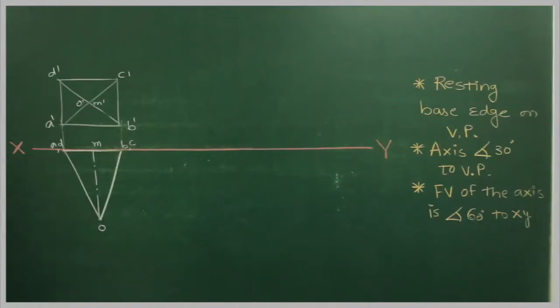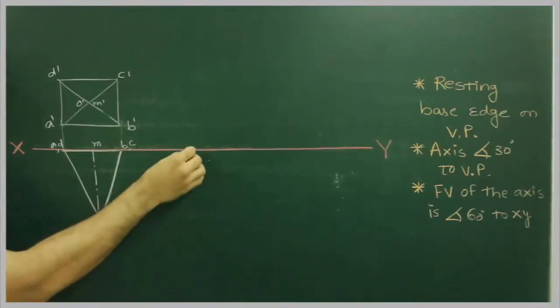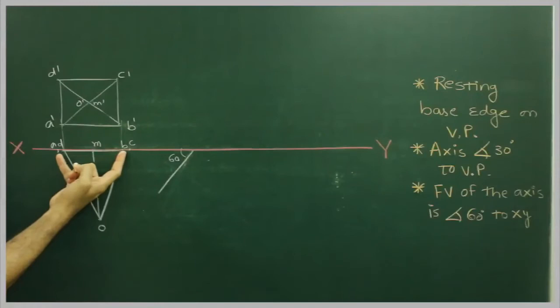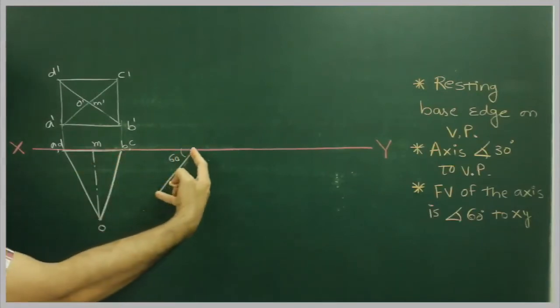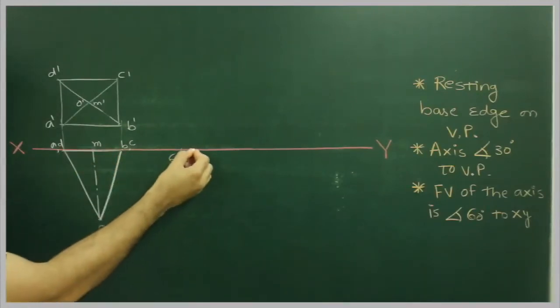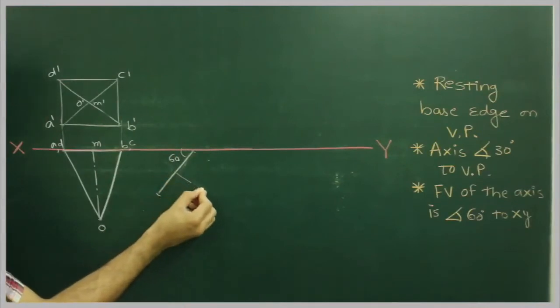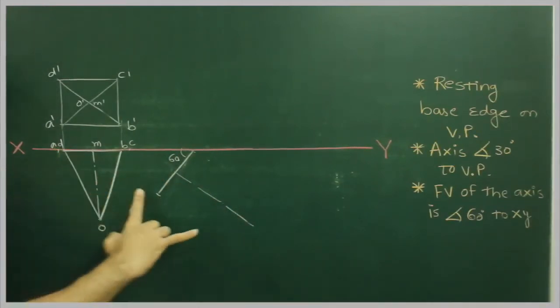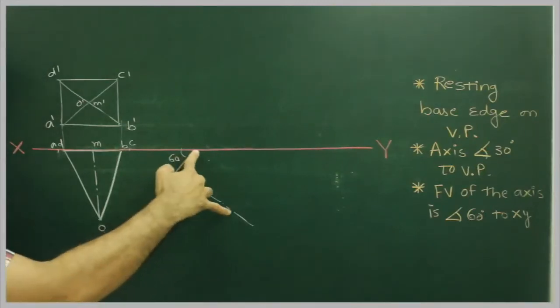Now they have said axis inclined at 30 degree to VP. If axis inclined at 30 degree, then base will be inclined at 60 degree. So we will draw 60 degree. We will take dc to ad, we will cut down this side.